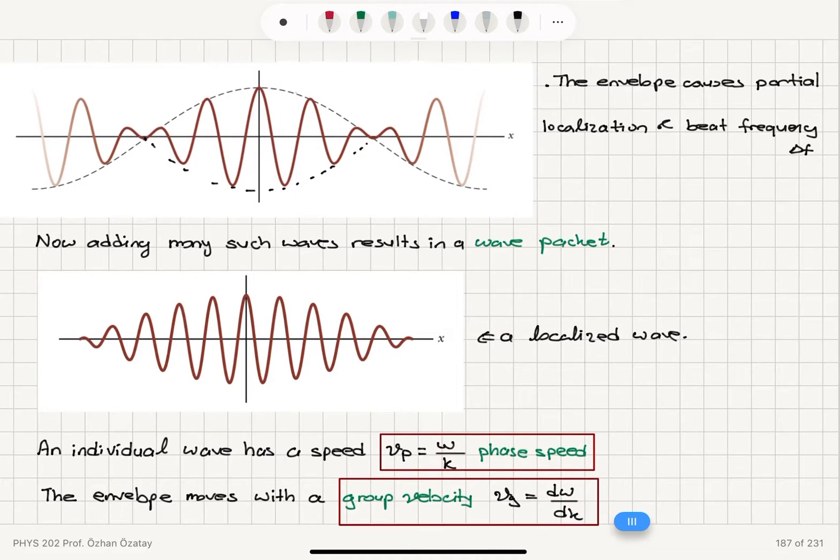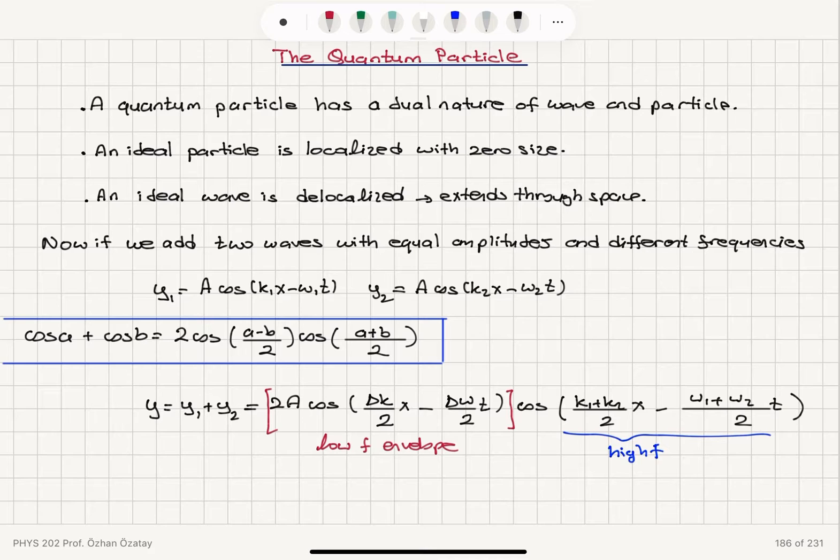So the addition of two wave functions gives us this partial localization of the wave. We have a high frequency component that is oscillating in a low frequency envelope. The envelope causes partial localization and beat frequency delta f.